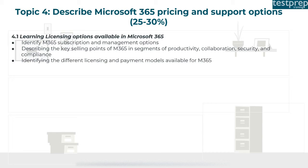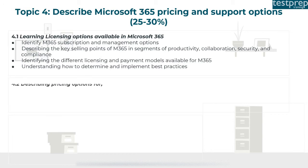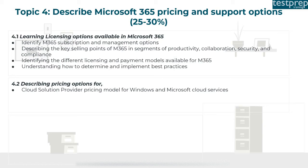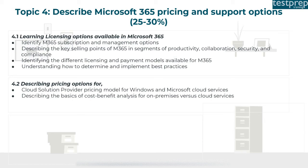Licensing options also include describing the key selling points of M365 across productivity, collaboration, security, and compliance segments; identifying different licensing and payment models available for M365; and understanding how to determine and implement best practices. Number two: describing pricing options, including the cloud solution provider pricing model for Windows and Microsoft cloud services, and the basics of cost-benefit analysis for on-premises versus cloud services.